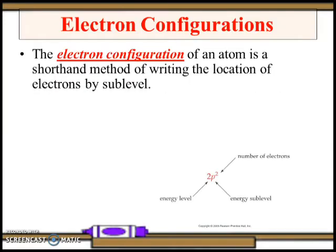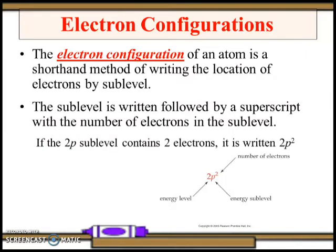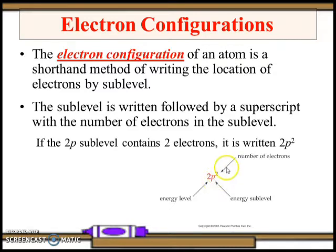The electron configuration of an atom is a shorthand method of writing the location of electrons by sub level. The sub level is written followed by a superscript showing the number of electrons in that sub level. For example, if the 2p sub level contains two electrons, it is written 2p², where 2 is the energy level, p is the sub level, and the superscript is the number of electrons.